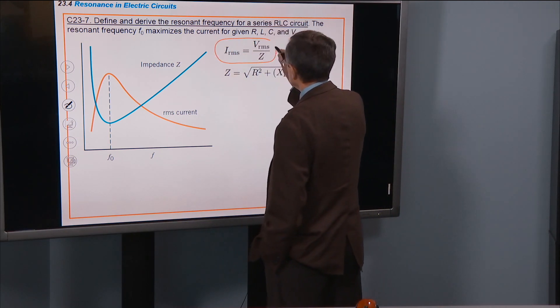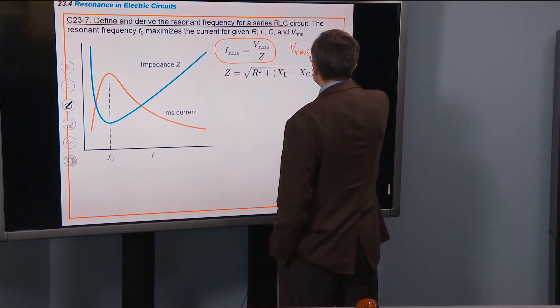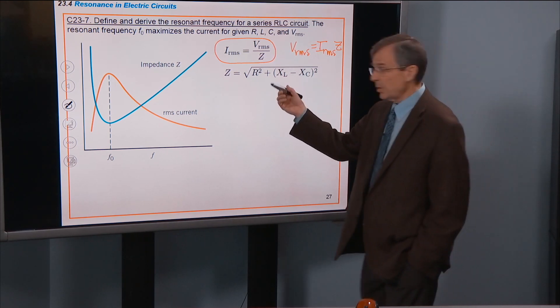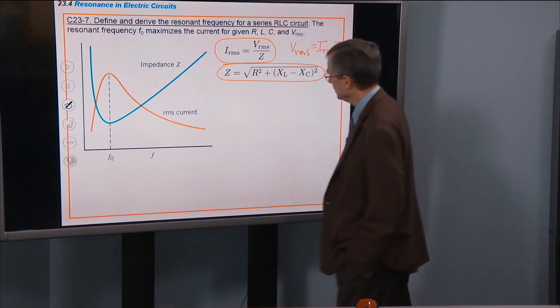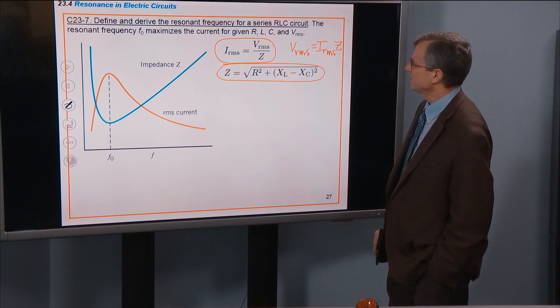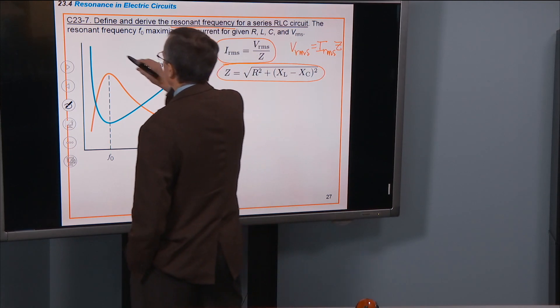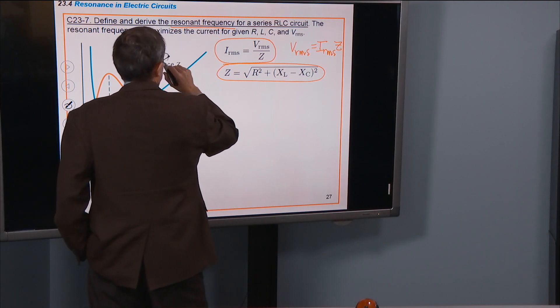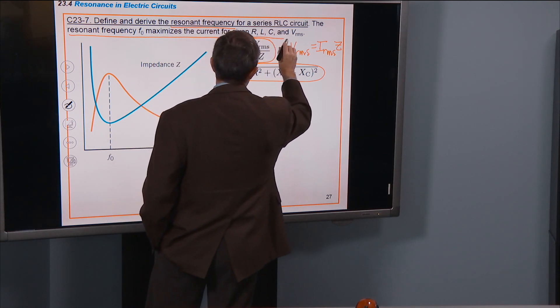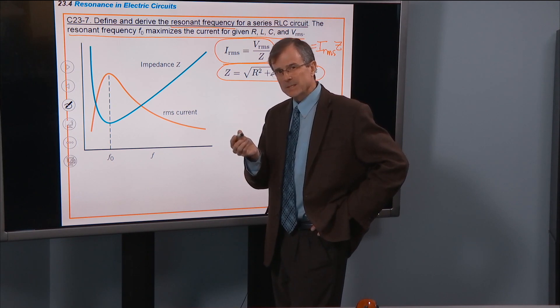This equation is just the definition of impedance. You might remember it as V RMS equals I RMS times Z. Okay? And Z, we know. It's the square root. We derive that. Square root of R squared plus XL minus XC quantity squared. What we're interested in doing is to define and derive the resonant frequency. So the definition of the resonant frequency. The resonant frequency maximizes the current for given R, L, C, and V RMS. So I want to find the frequency that maximizes the current.